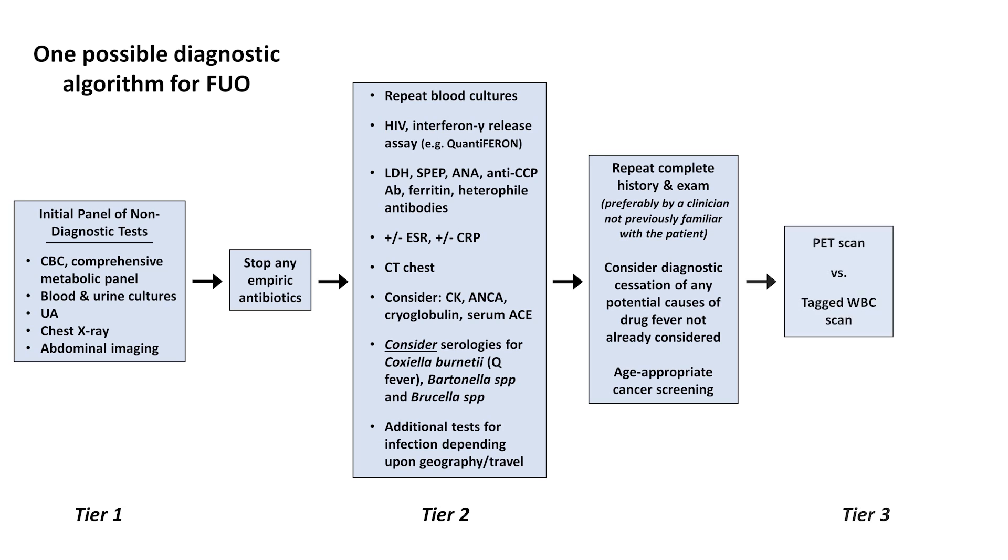Historically, this was the tagged white cell scan, but more recently, a PET scan has become more popular for this purpose. Both of these scans identify general areas of inflammation, so they don't provide a diagnosis, but rather an organ or anatomic region of interest that might be amenable to a biopsy. In this way, it's actually beneficial that these scans are very nonspecific because they'll pick up infections, malignancies, and non-infectious inflammatory problems all relatively well. In fact, some clinicians advocate for using PET scans much earlier in the algorithm, under what I've labeled tier 2.